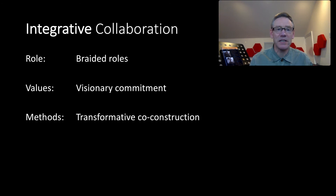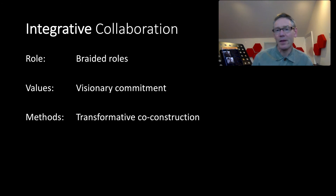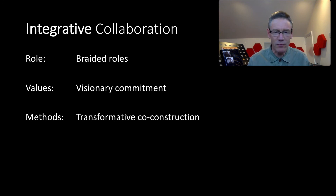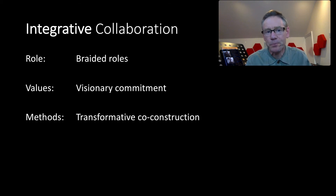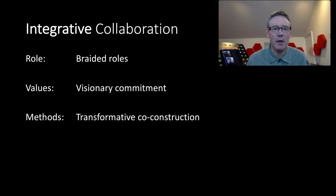That leads to integrative collaboration, where things become so crossed, enmeshed, and intertwined that the roles are braided. This tends to be attributed to collaborative groups that have a visionary commitment to something really new — often quite groundbreaking in how they work. Their methods are transformative: they are co-constructing, but things are moving, shifting, braided, and fluid to the point whereby something is transforming and perhaps something new is coming to light.